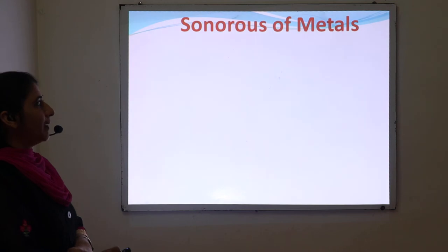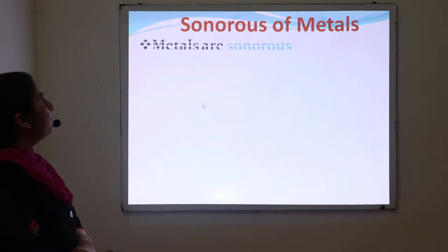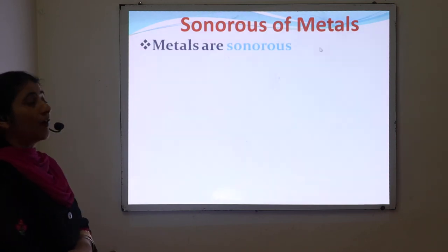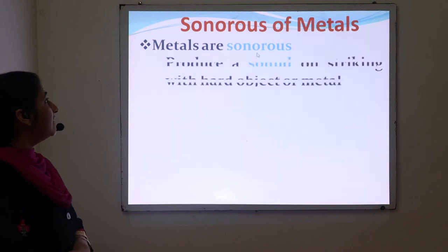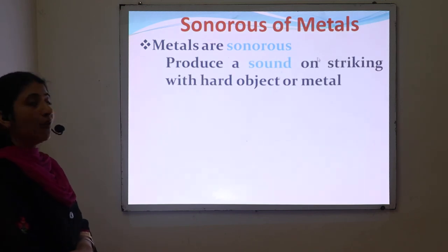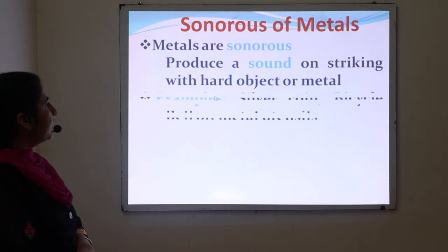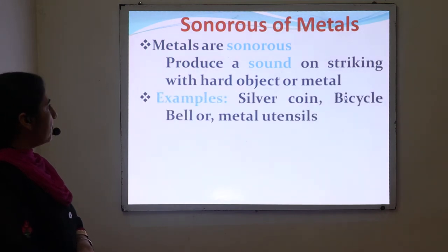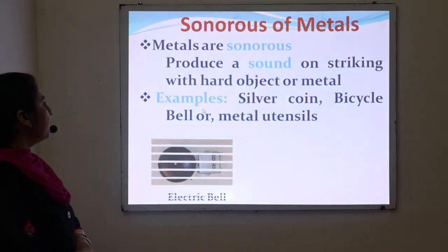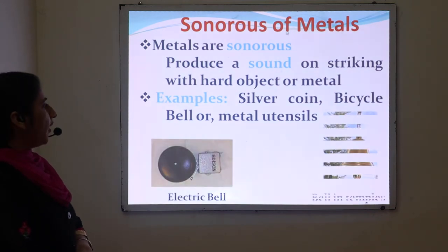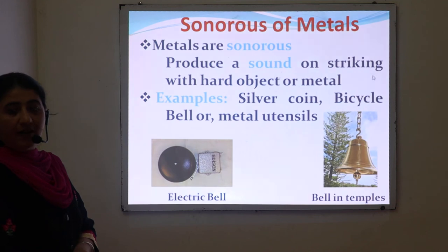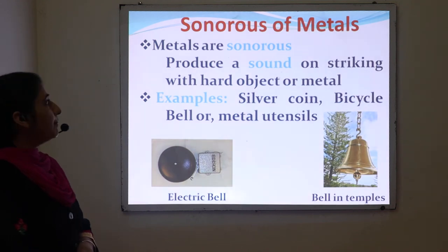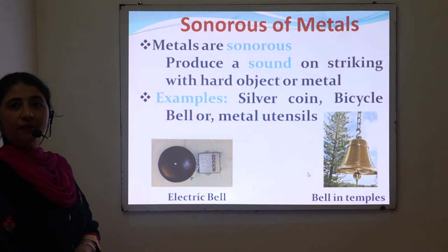Next is sonorous property of metals. Metals are sonorous in nature, meaning they produce a sound when struck with a hard object or another metal. For example, silver coins, bicycle bells, metal utensils, electric bells, or temple bells — all are metals and they produce a sound when struck against another metal surface.